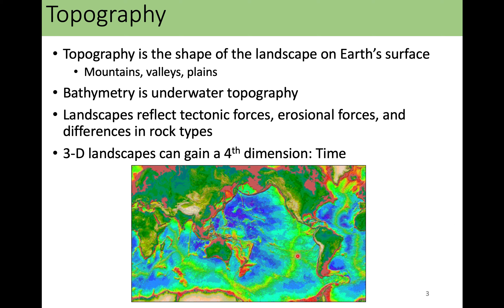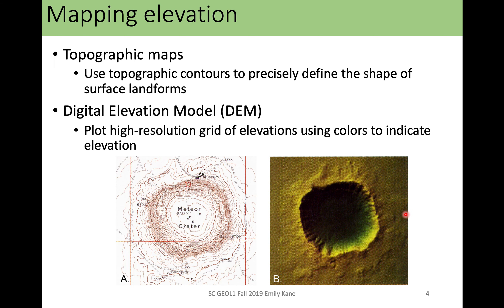We have our spreading center, mid-ocean ridge. We can see some really deep trenches along our subduction zones. We can also gain a fourth dimension of time — when we look at our topography and see how it changes over time, we're really adding that fourth dimension. When we map our elevation, we map with topographic maps or with digital elevation models, which are called DEMs.